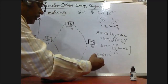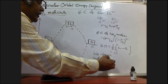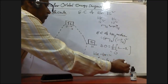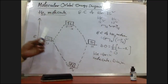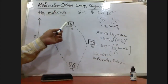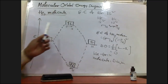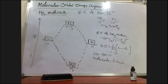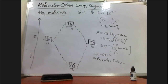The He₂ molecule is diamagnetic, as there are no unpaired electrons in either the bonding or anti-bonding molecular orbitals. This is the molecular orbital energy diagram for the He₂ molecule. Thank you for watching Tranad Chemistry Classes. Please like the video, share and subscribe the channel.